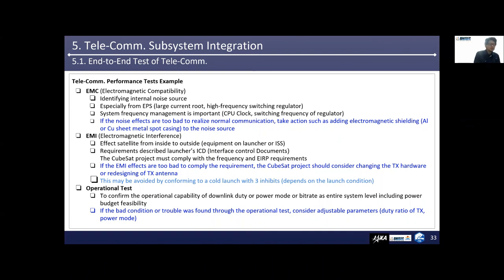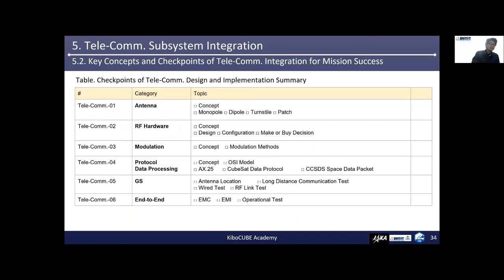Finally, we perform the operational test. The objective is to confirm the operational capability of downlink duty, power mode, or bitrate at the entire system level, including power budget feasibility. A part of this test may be performed at a long-distance communication test from outside. However, since it is difficult to continue testing outdoors for a long time, the test will generally be performed indoors. If a bad condition or trouble is found through the operational test, please consider adjustable parameters like duty ratio of TX or power mode output power. This table shows checkpoints of telecommunication design and implementation summary. Please use this table for reviewing this lecture.